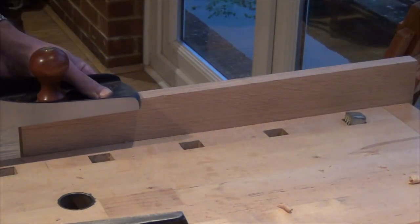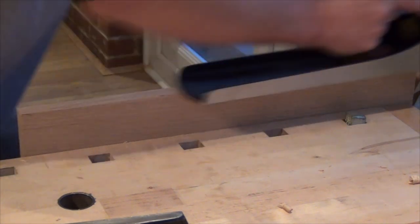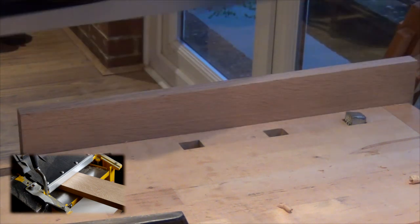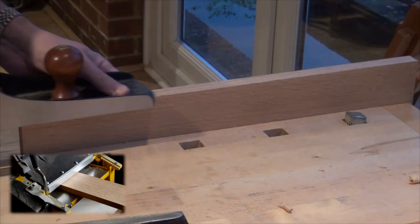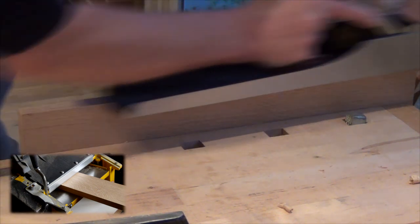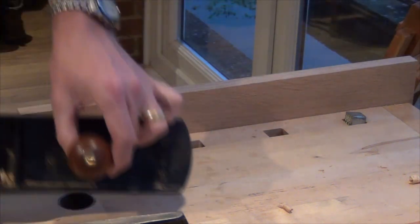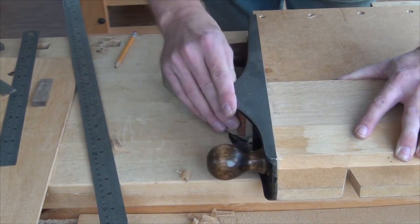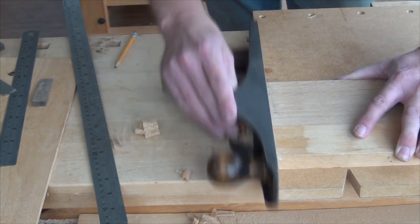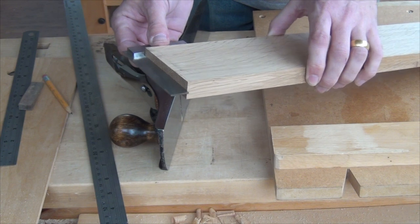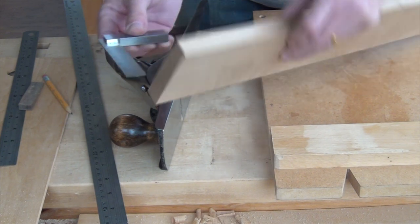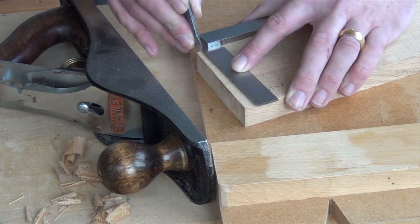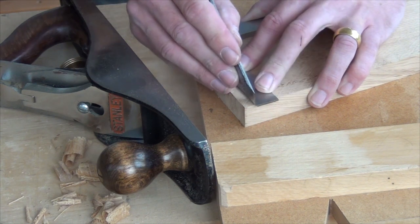Bringing to thickness and width is a piece of cake and dare I even say pleasurable with the number 8. Plugged in users you can go to your thicknesser. With one end shot square we can measure for, mark, saw and shoot the other end to length.